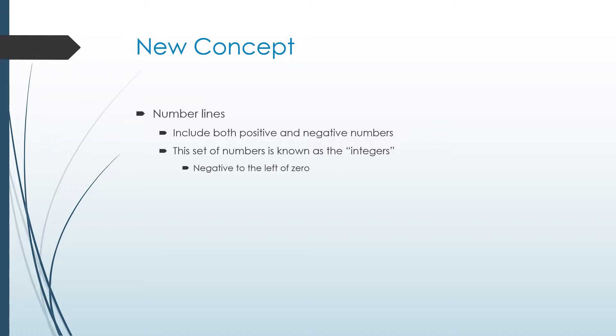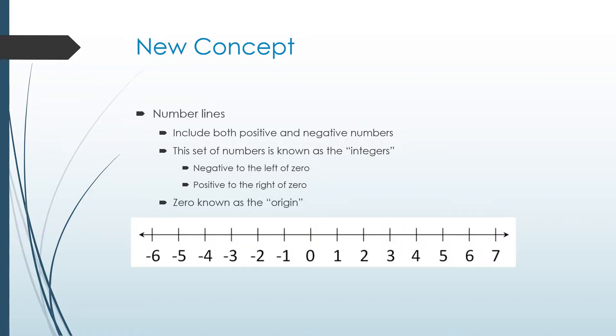Negative is always to the left of zero. Positive is always to the right of zero. And we also call zero the origin because everything starts at zero on a number line. Here's just an example of a number line. Notice it has two arrows, one on each end. That means the number line goes on forever in both directions, positive and negative.